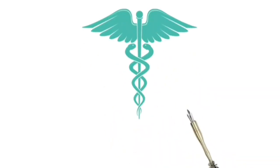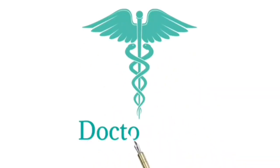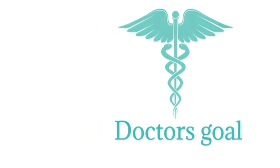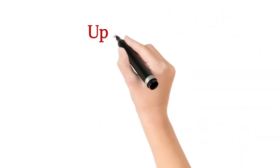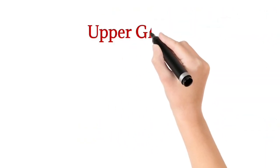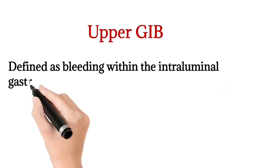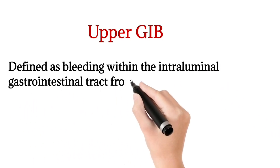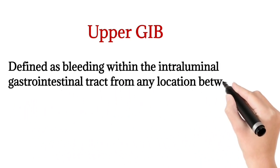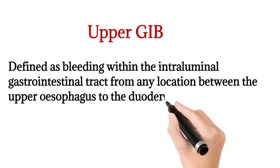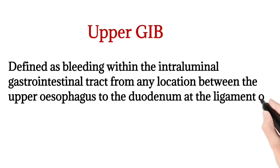Today we will discuss a very important topic: GI bleeding. Upper GI bleeding is defined as bleeding within the intraluminal gastrointestinal tract from any location between the upper esophagus to the duodenum at the ligament of Treitz.